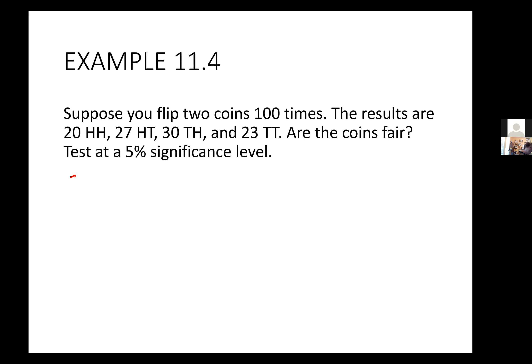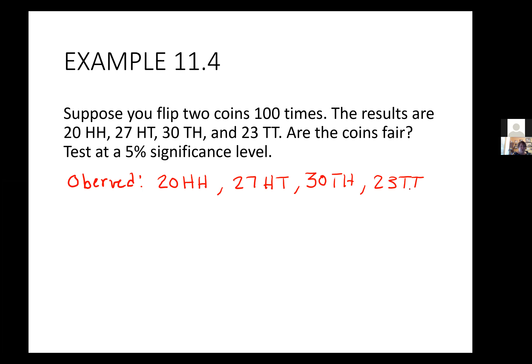The observed data is the data that you got from conducting your test. What you observe is that there are 20 where you get both heads, 27 where you get head-tail, 30 where you get tail-head, and 23 where you get tail-tail. Now, what would you expect to see? You have to go back to your probability — how do you calculate probability?